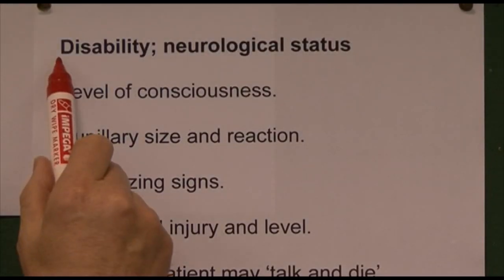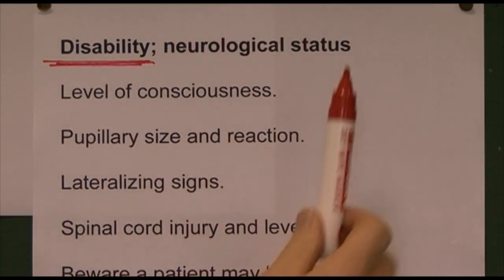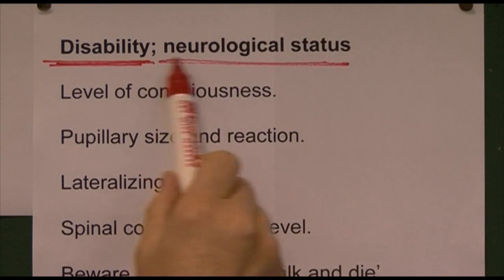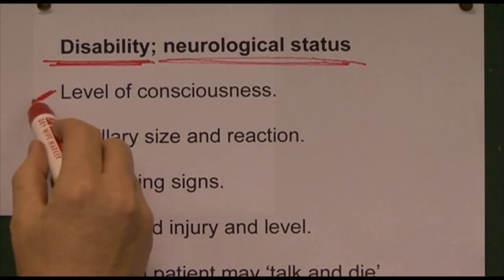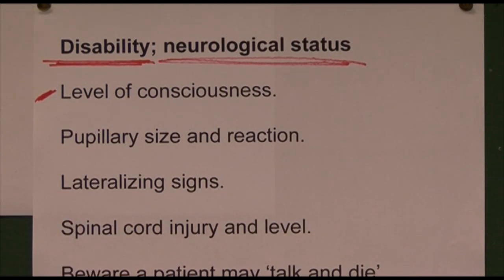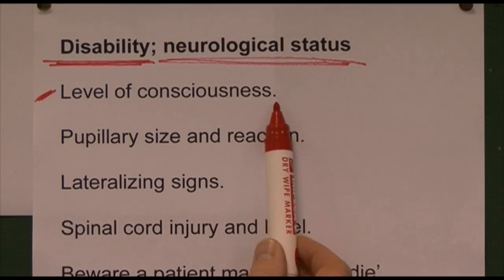D for disability — looking at neurological status. We want to assess the patient's level of consciousness. We can use the AVPU scale: Alert, responds to Voice, responds to Pain, or Unresponsive. But the Glasgow Coma Scale is better, so use GCS to assess level of consciousness.